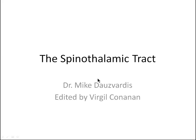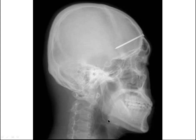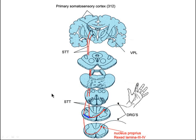This tape deals with the spinothalamic tract, a principal pain pathway in the human body. We need a way to perceive pain, and the human body has several different tracts. One of the key tracts that relays pain to consciousness is the spinothalamic tract — a tract that goes from the spinal cord to the thalamus.